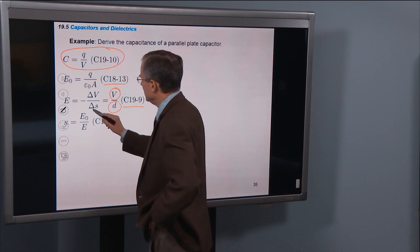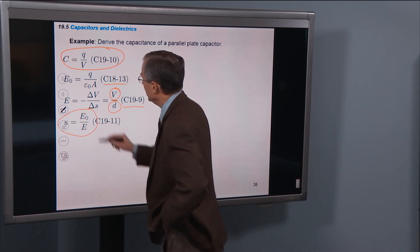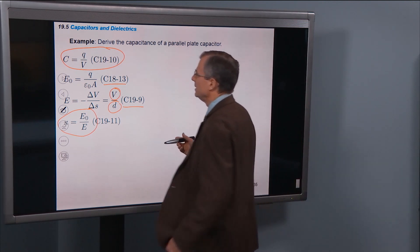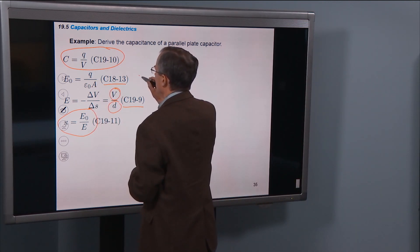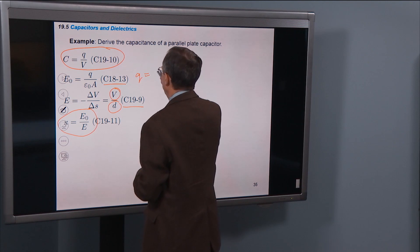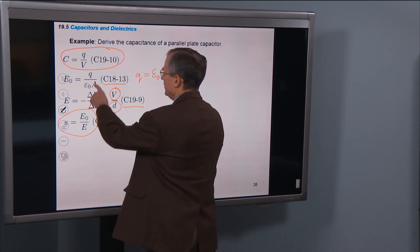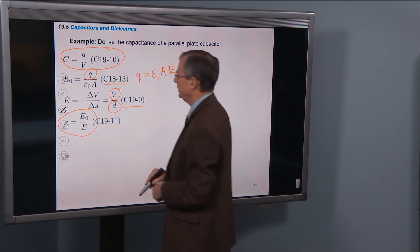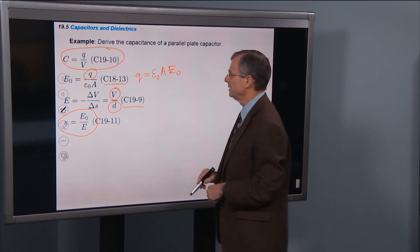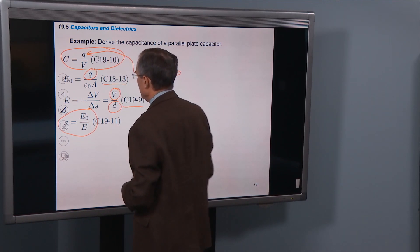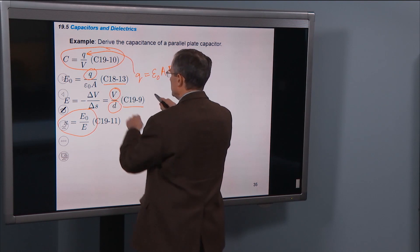That E is ε0 over E. So now we're going to actually derive that capacitance. So from this equation we get that Q is ε0AE0. So I've just solved this equation for Q. ε0A times E0. And I'm going to plug that into here.